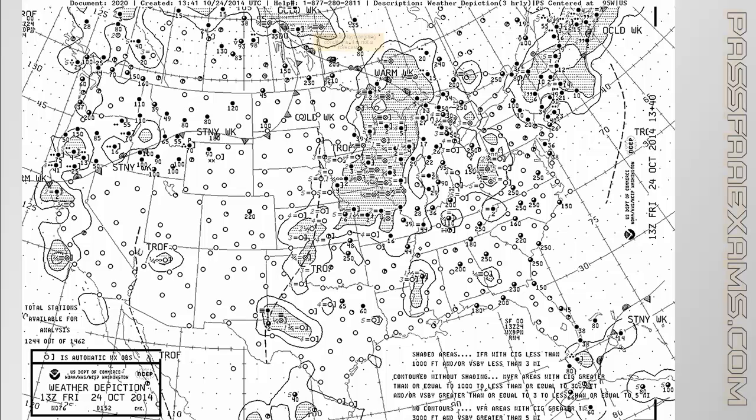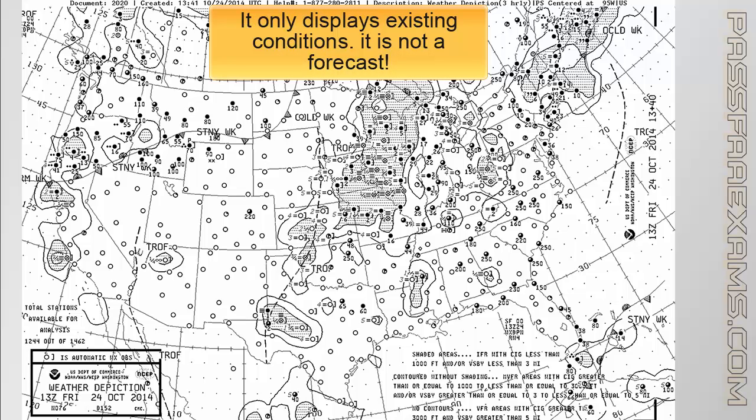This is a look at existing conditions — it is not a forecast, so it will not tell you what's going to happen in the future. This is important for a couple of reasons. First, it helps you eliminate wrong answers on the various tests, as one or both of the wrong answers will say that this chart will provide a way to figure out what will happen in the future, either by calling it a forecast or saying it indicates weather trends. Trends is what's going to happen in the future. This leaves you with the only correct answer, which calls this chart an observation, which is exactly what it is.